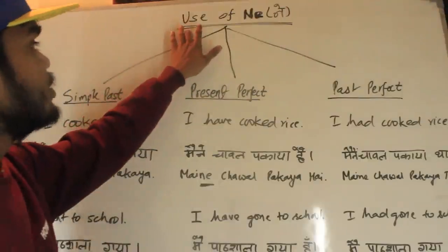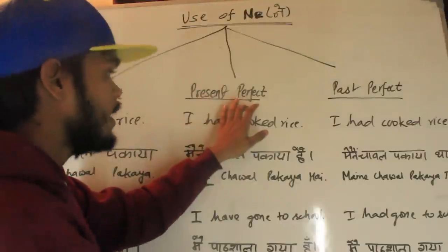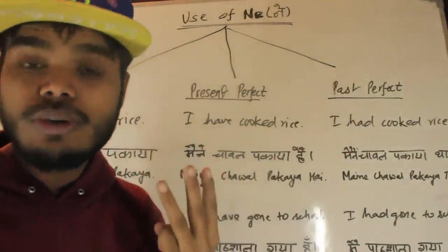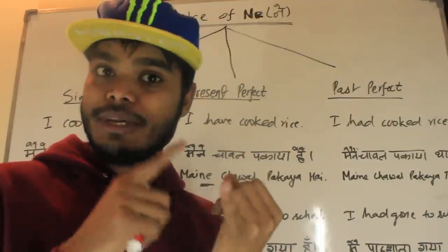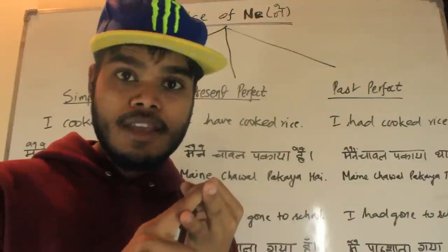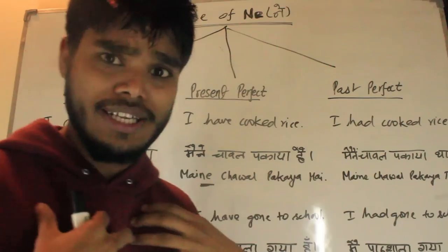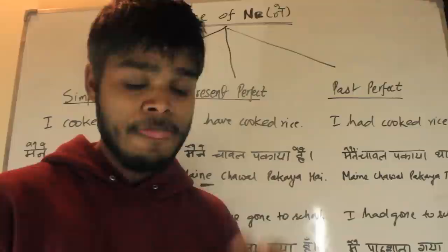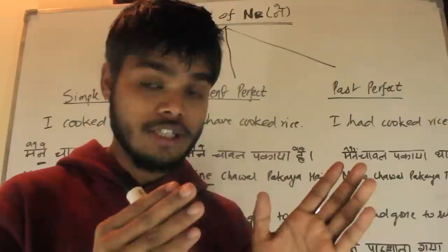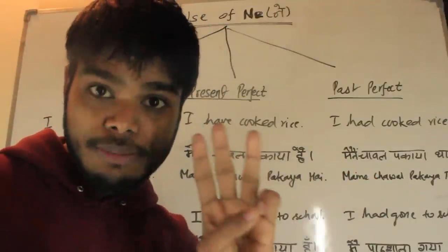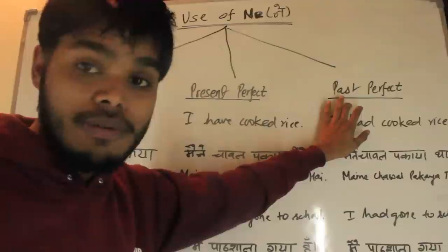As you can see, the use of Ne applies in three places: simple past (past indefinite), present perfect, and past perfect. These are the three tenses in which we use Ne. The subject is going to take Ne. The subject can be a noun or a pronoun. The pronoun has a very interesting story that we'll talk about later, and nouns like names — Anil, Sunil, Gita, Sita — they all take Ne.